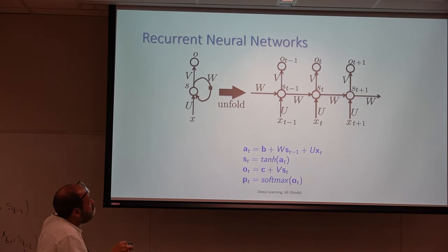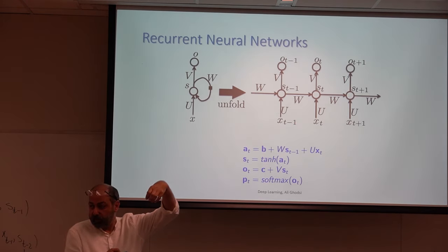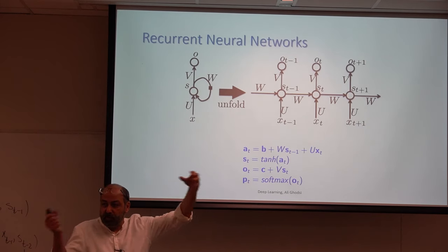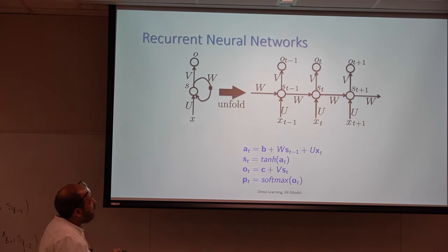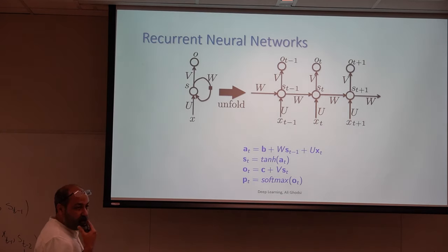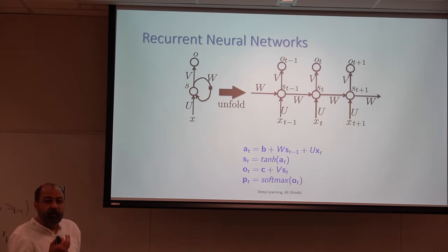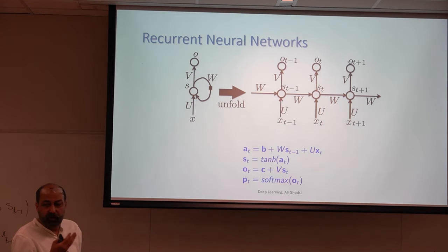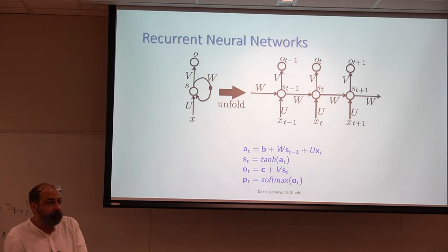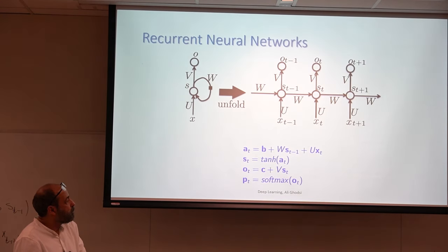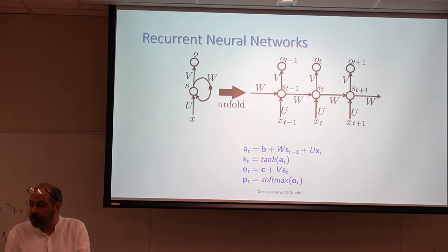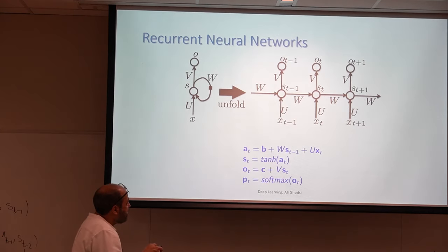That's the first part of this node — a weighted sum of every input. Then you apply a non-linearity to get S_t. Traditionally, this non-linearity is the hyperbolic tangent, though it's not common anymore. Usually we handle this with other activation functions, including ReLU, but traditionally it was tanh.